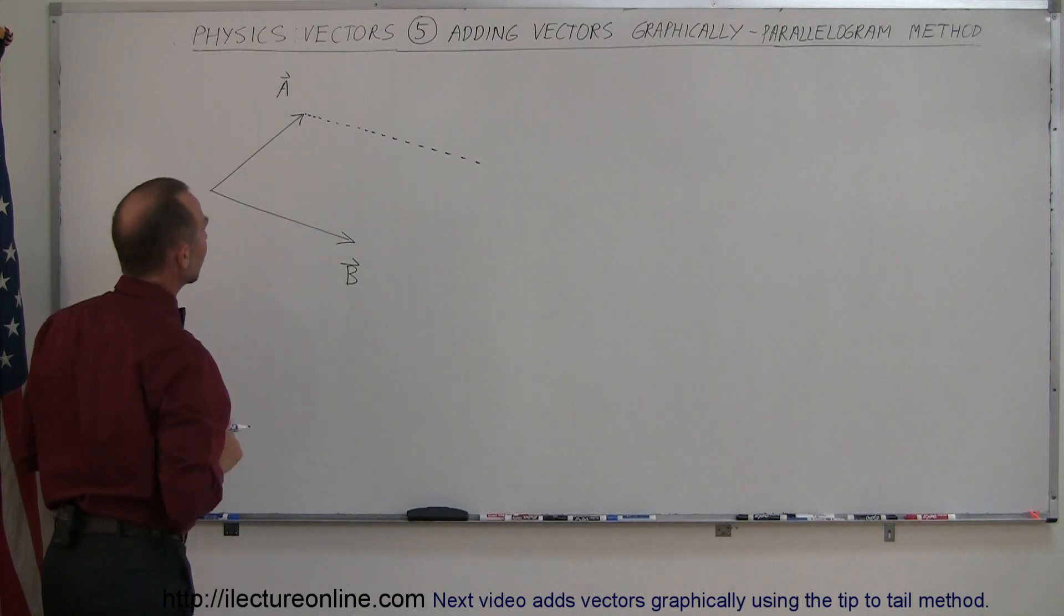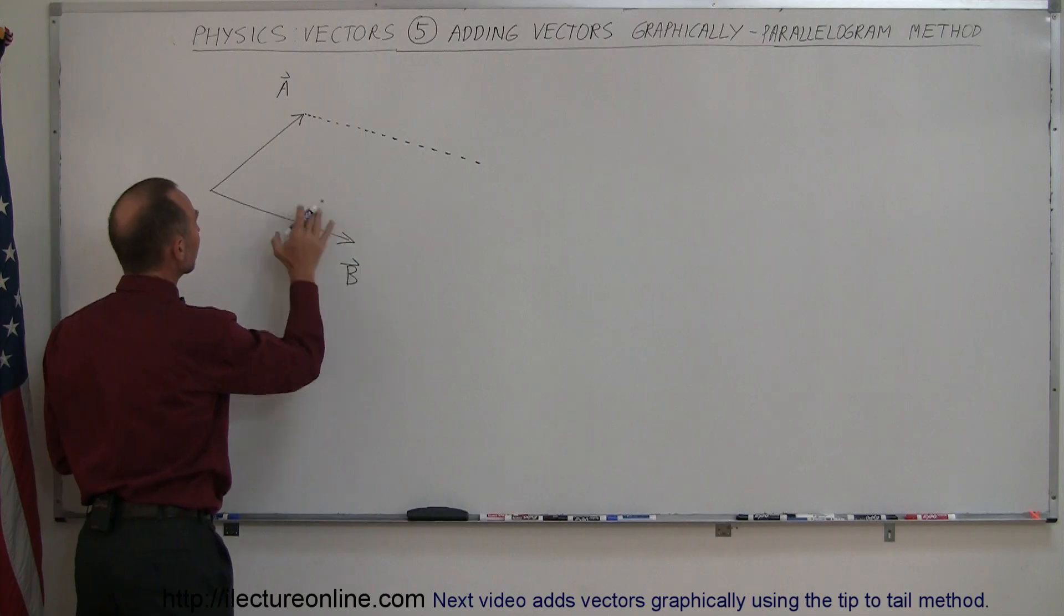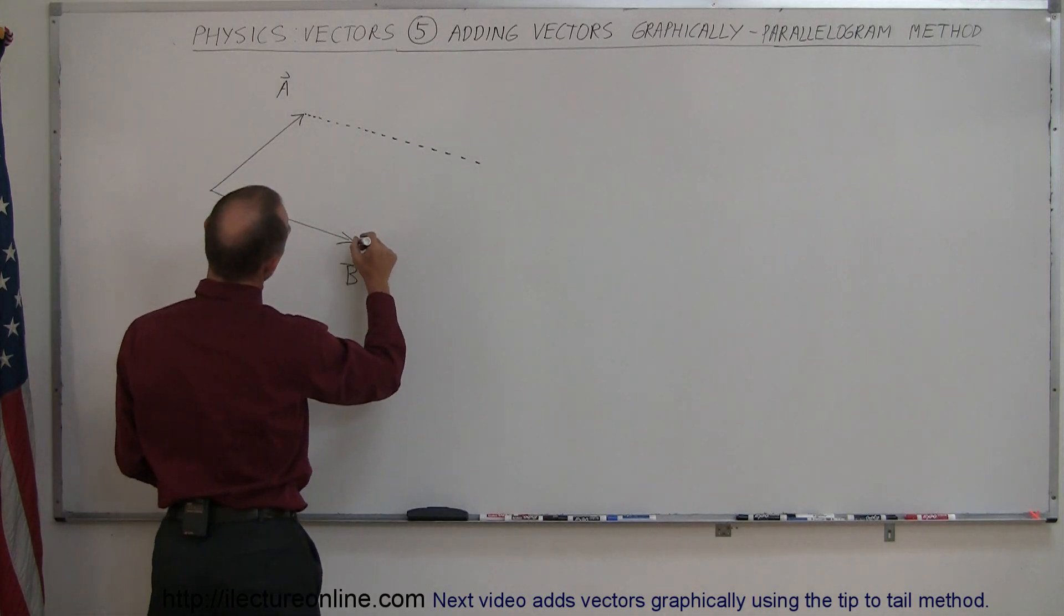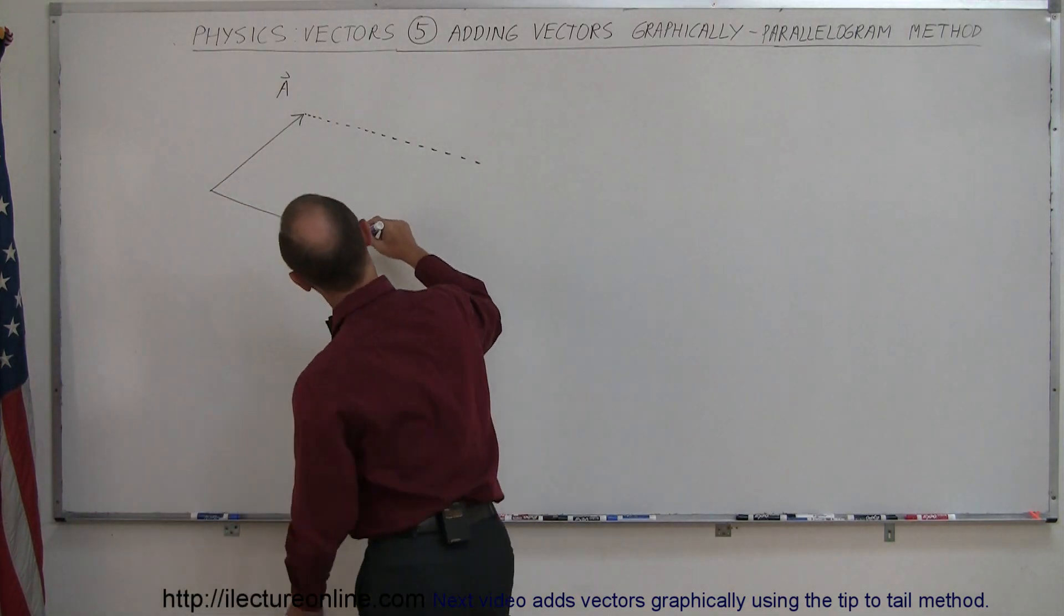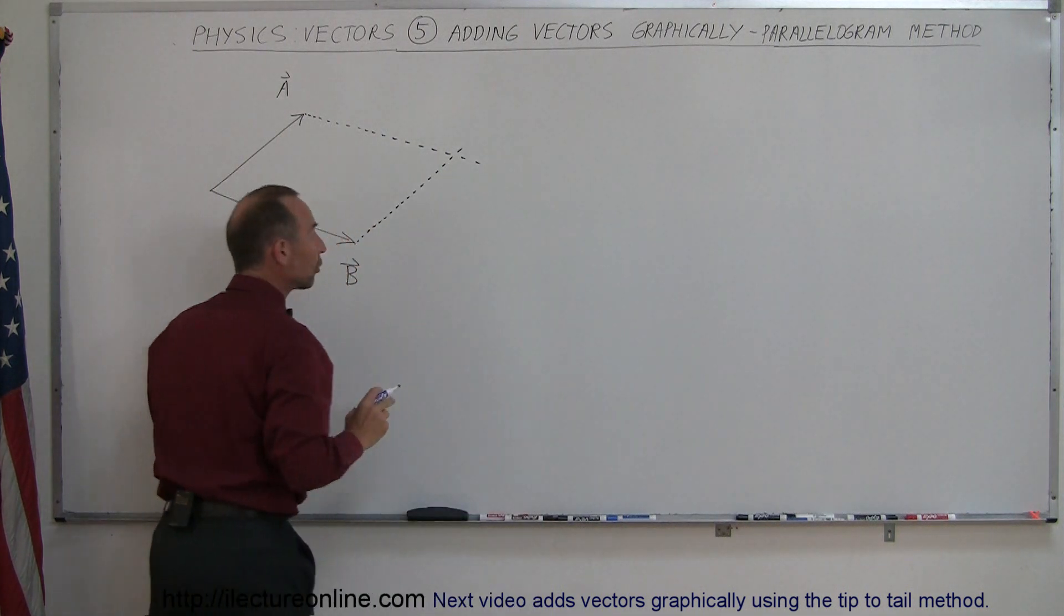So parallel to vector B, you're going to do the same with vector A. So you go to the tip of vector B and draw a line parallel to vector A. And let's see, that would be kind of like this. And at some point those two lines will cross.